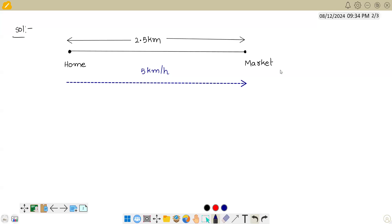So let us try to find what is the time taken. We know time, let me call this time as t1. We know time equals distance by speed. So here the distance is 2.5 km, and the speed is 5 km per hour.